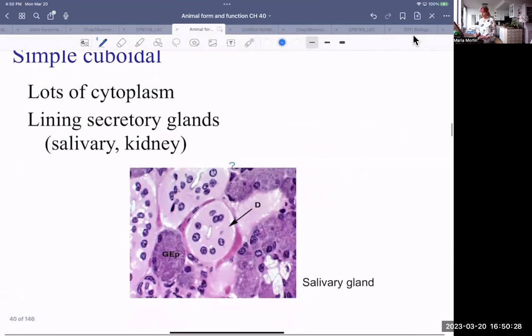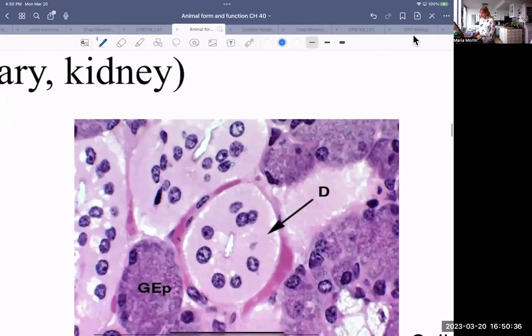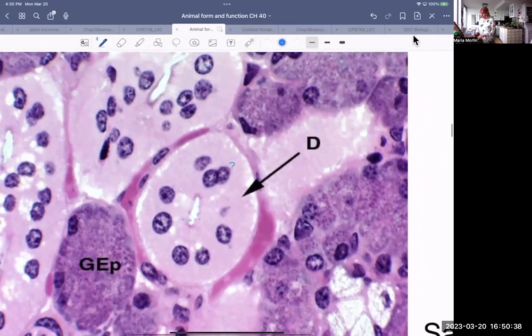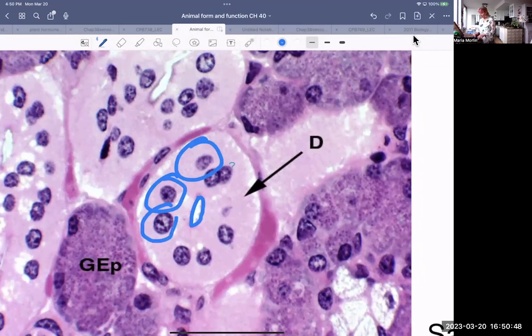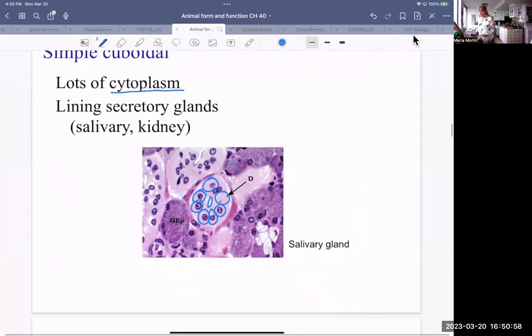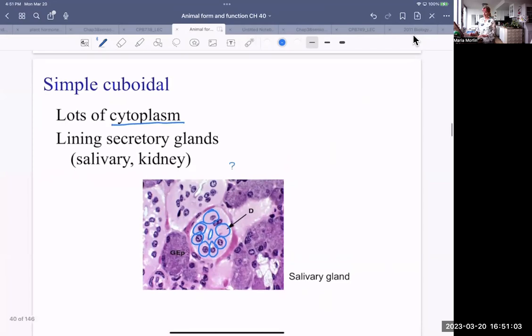Cuboidal tissue: lots of cytoplasm. It might, for example, line a salivary gland. So you can always tell glands because if you're looking at them through a microscope, there's this clear section in the center, usually surrounded by cells. They're not obviously cuboidal, but those are the shapes of cells that line ducts, for example. And in the case of the salivary gland, produces saliva, mucus, serous fluid, electrolytes, and such.